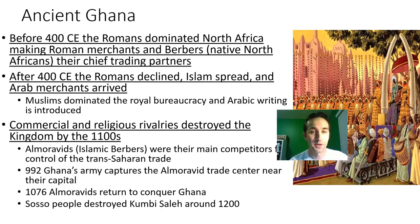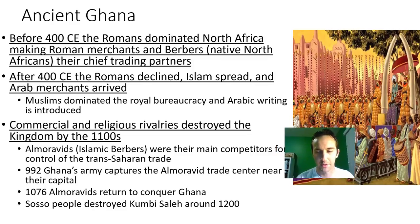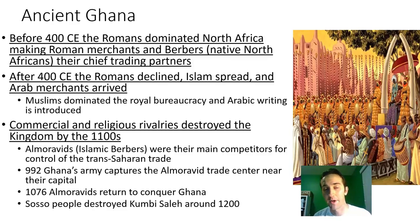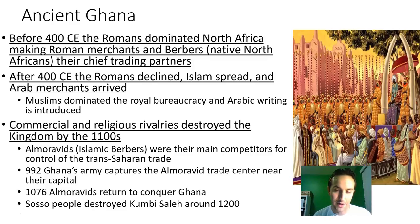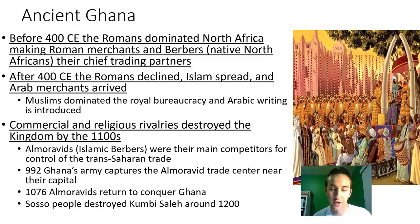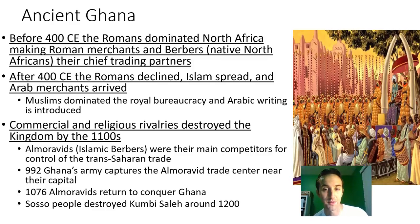Before 400 CE, the Romans were dominating North Africa — really anything touching the Mediterranean was part of the Roman Empire. So the Romans dominated North Africa, making Roman merchants and Berbers, who are native North Africans, their chief trading partners. When the Roman Empire started falling apart around 400, Ghana had to find new trade partners, and this is the rise of Islam. As Islam spread, Arab merchants arrived and started to bring their religion into the capital. Muslims started to make their way into the hierarchy, into the government, and really dominated the royal bureaucracy, even bringing in their own writing system, which became necessary for efficient government.